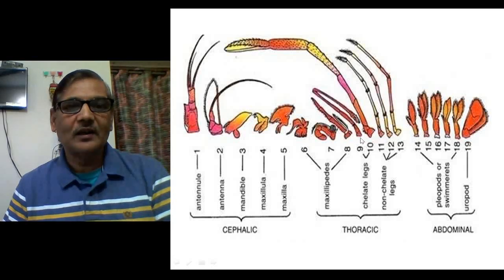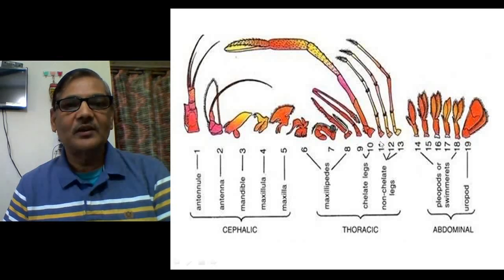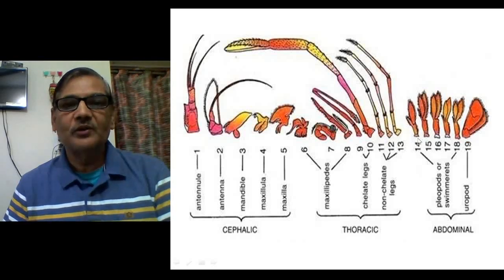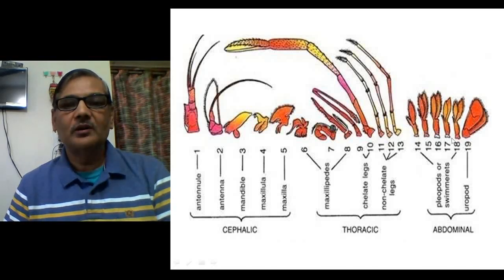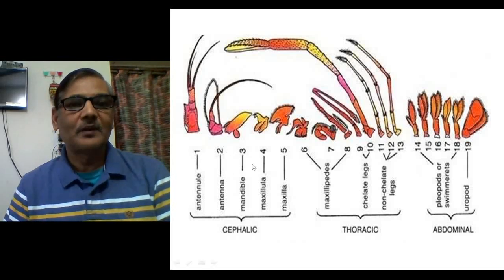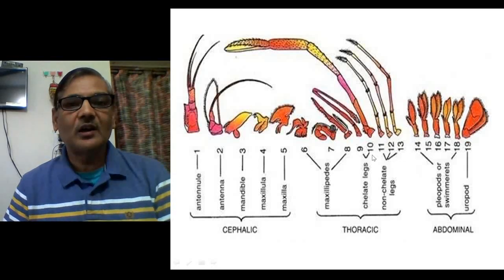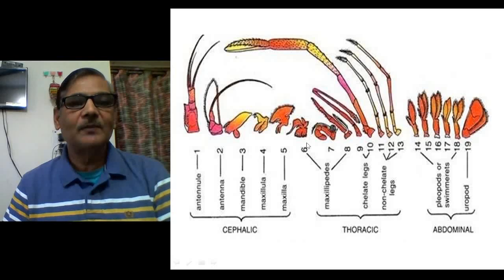Then there are walking legs — the non-chelate and chelate legs — five pairs in number. There are also pleopods which help in the swimming process, and a female may use such structures to hold her eggs during breeding time. So these structures are used for various functions, but their origin pattern is the same, making them serially arranged homologous organs.